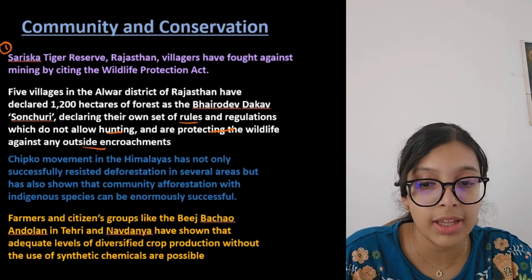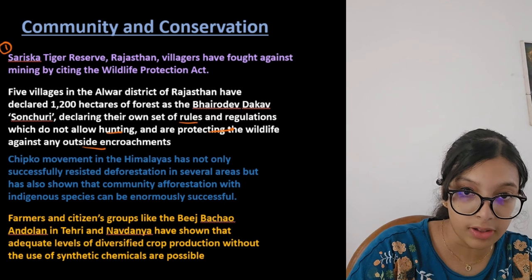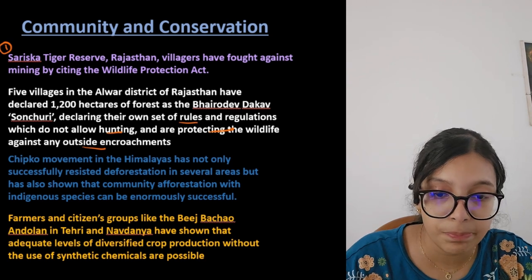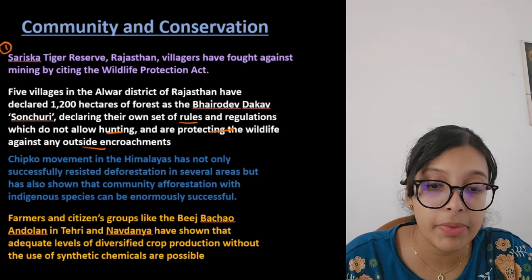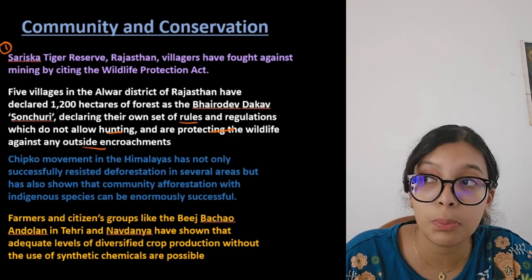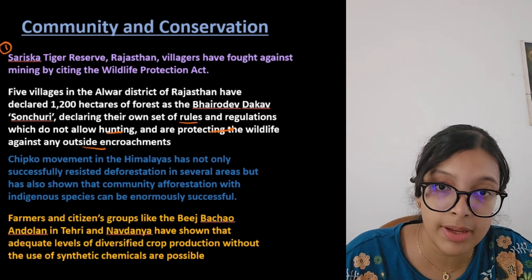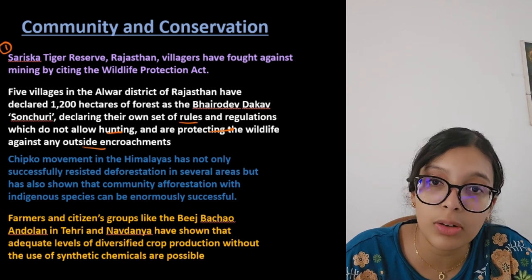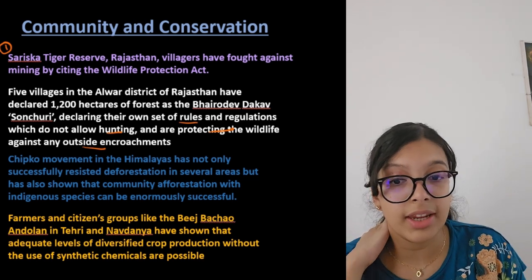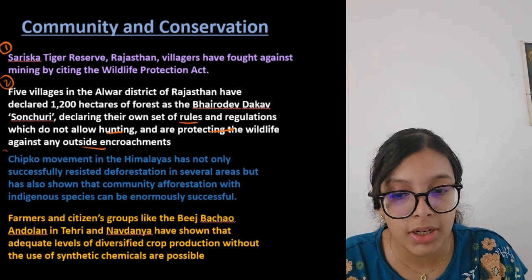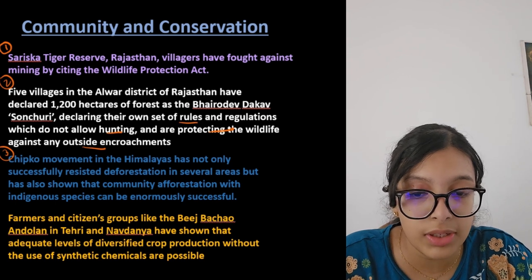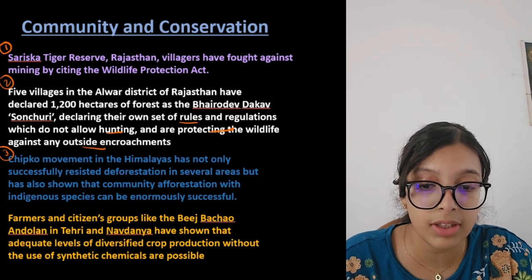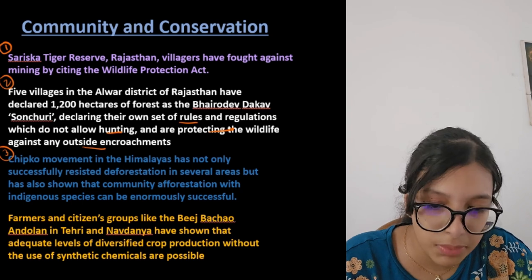Five villages in the Alwar district of Rajasthan declared 1,200 hectares of forest as the Bhairodev Dakav sanctuary, declaring their own rules and regulations — not allowing hunting and protecting wildlife against any outside encroachment. This is the second example: local community people took the forest into their own hands. The Chipko movement in the Himalayas not only successfully resisted deforestation but also showed that community afforestation with indigenous species can be enormously successful.